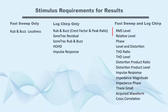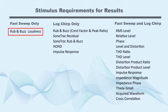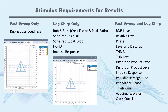While most measurement results can use either stimulus type, the rub and buzz loudness result added in version 6.1 requires the fast sweep stimulus. Additionally, a few other results require the logchirp stimulus. Result graphs indicate when the result data set is not valid for a selected stimulus.